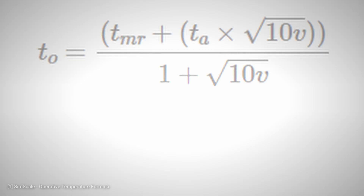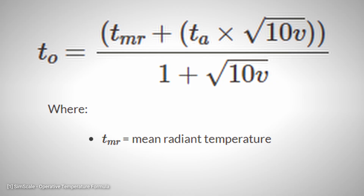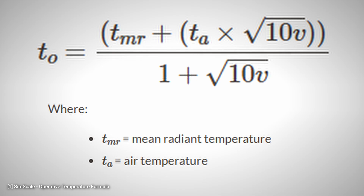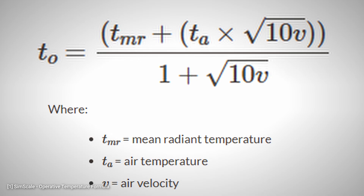Operative temperature can be derived using the following formula, where TMR is the mean radiant temperature, TA is the air temperature, and V is the air velocity.